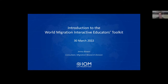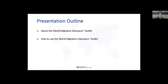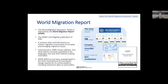Thank you so much Mari for the introduction. I am delighted to take you all through the new World Migration Interactive Educators Toolkit. Today I will begin with the contents of the toolkit and then showcase how to use the digital platform. The World Migration Report is the flagship publication of IOM. It presents data and information on human migration and analysis of complex and emerging migration issues. The report series commenced in the year 2000 and due to its demand has been produced every two years, now with 11 editions.